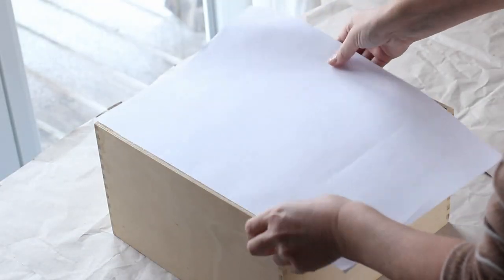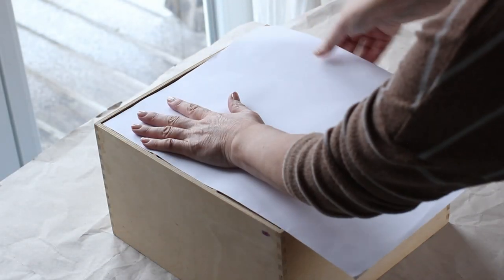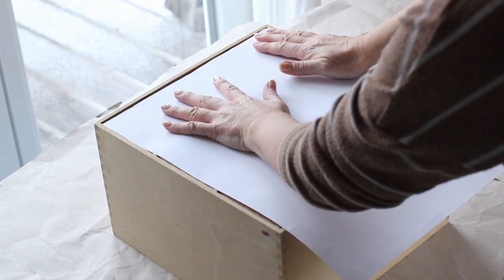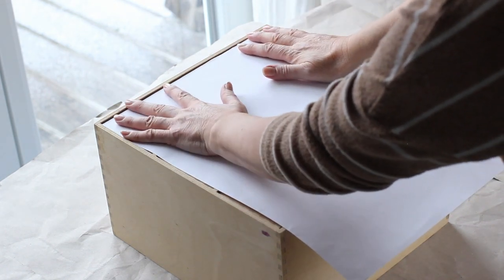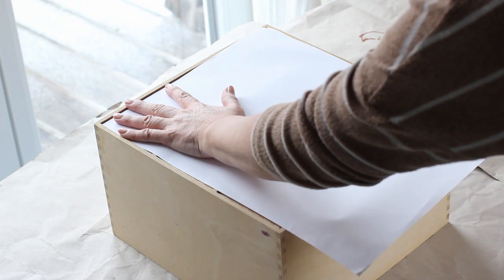I've already wiped this little IKEA Mop chest over with a damp cloth to remove any dust and I'm just going to make a template for the farmhouse star quilt design.